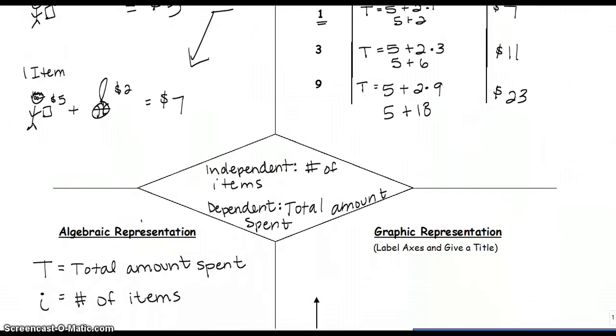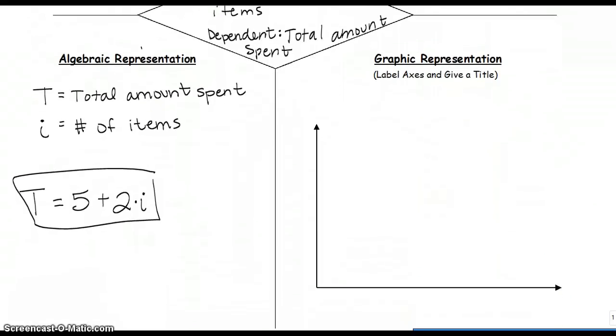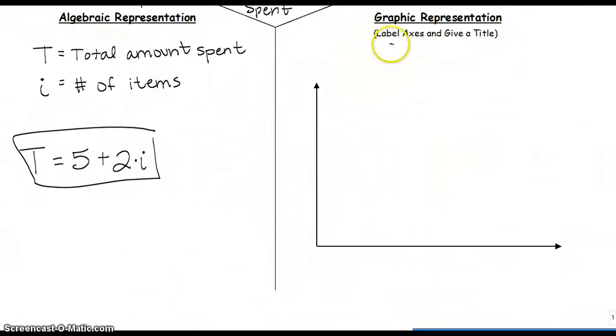We can take this and represent it in a graph. Make sure you are always labeling axes and give a title. So I am going to say Craft Fair Fundraiser. Our x-axis is going to represent the number of items, and our y-axis is going to represent the total amount.